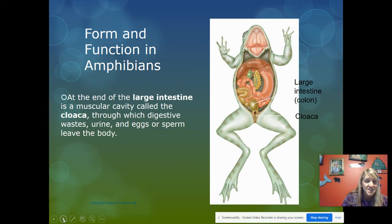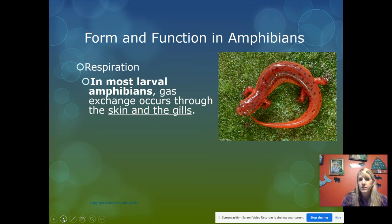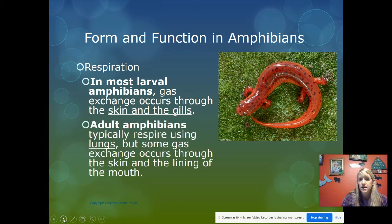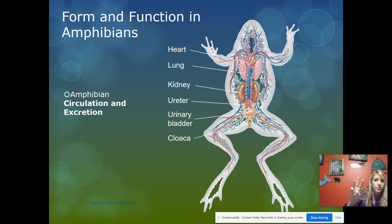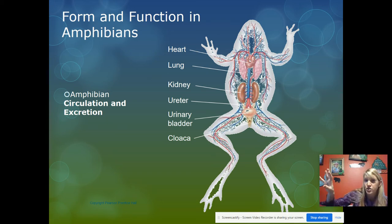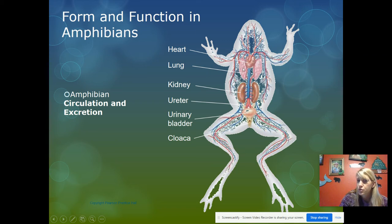The cloaca is where urine, eggs, or sperm exit — but not at the same time, because we don't want sperm and feces mixing with the eggs. In most larval amphibians, gas exchange occurs through the skin and gills; in adults it's lungs and skin. The heart has three chambers — two atria and one ventricle — so on land they begin separating oxygen-rich and oxygen-poor blood. The kidneys filter the blood, and the bladder drains into the cloaca.